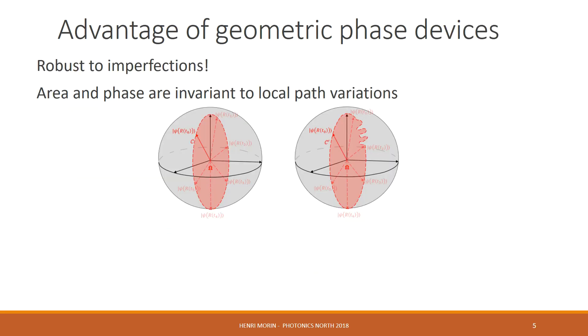Now, why is geometric phase advantageous? Well, robustness is built in since area and phase are invariant to local path variations. So if we look on the left here, we have a system evolving around a certain path with no perturbations along that path. But on the right, we have the same system evolving around the same path, but towards the end, there are perturbations.